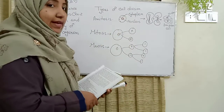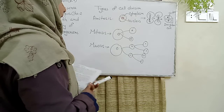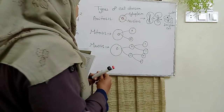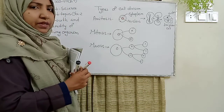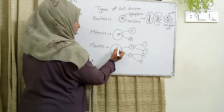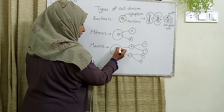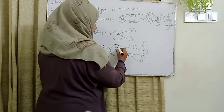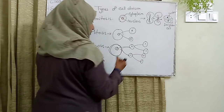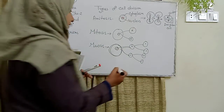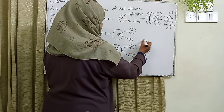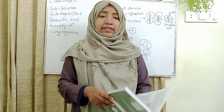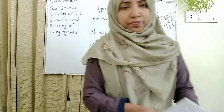To summarize today's lesson: our main topic was the types of cell division — amitosis, mitosis, and meiosis. In meiosis, there is reduction of chromosomes and four types of cells are formed through meiotic division. Today I explained Lesson 1: the types of cell division. Thank you.